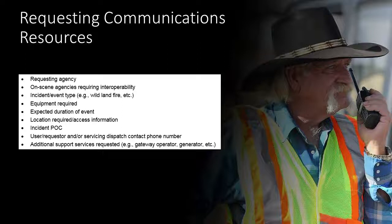The Regional SOP also details the availability of interoperability resources within the Heart of Texas region. These resources include radio caches, deployable and fixed communication gateways or patching units, mobile communication platforms, shared channels, and specially trained communications personnel.